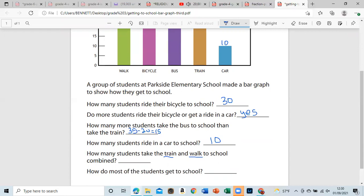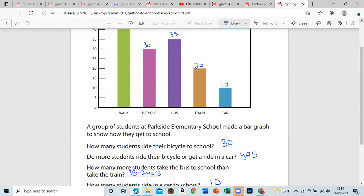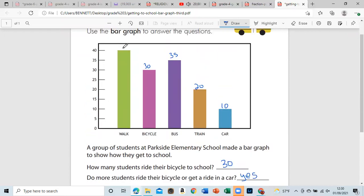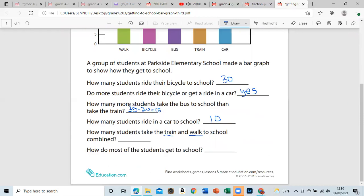The number that take the train is... let's just put walk, that is 40. And the number that takes train, so we're adding these two, so it's 40 plus 20. And that gives us 60.